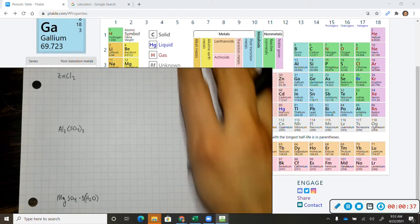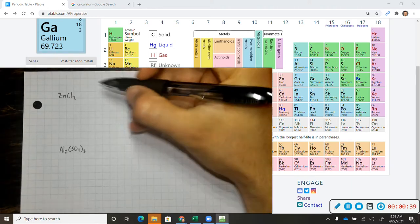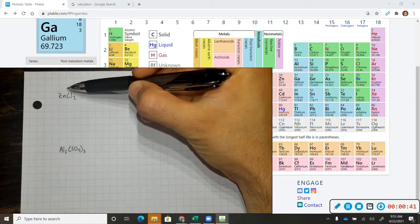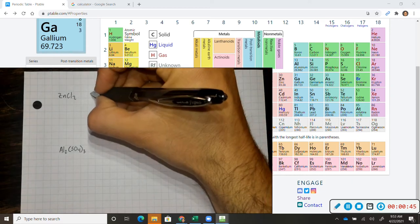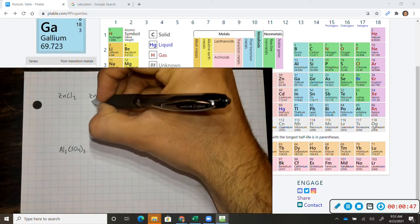Alright, so let's start off by looking at the individual formula masses of the elements zinc and chlorine. So let's write it out like this. Zinc and chlorine.